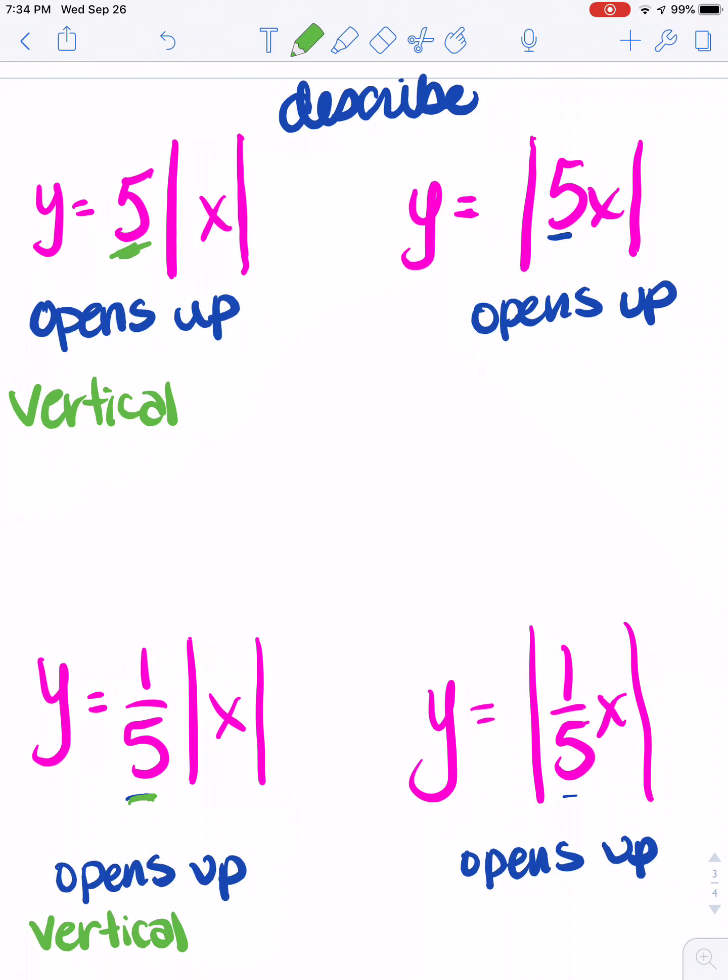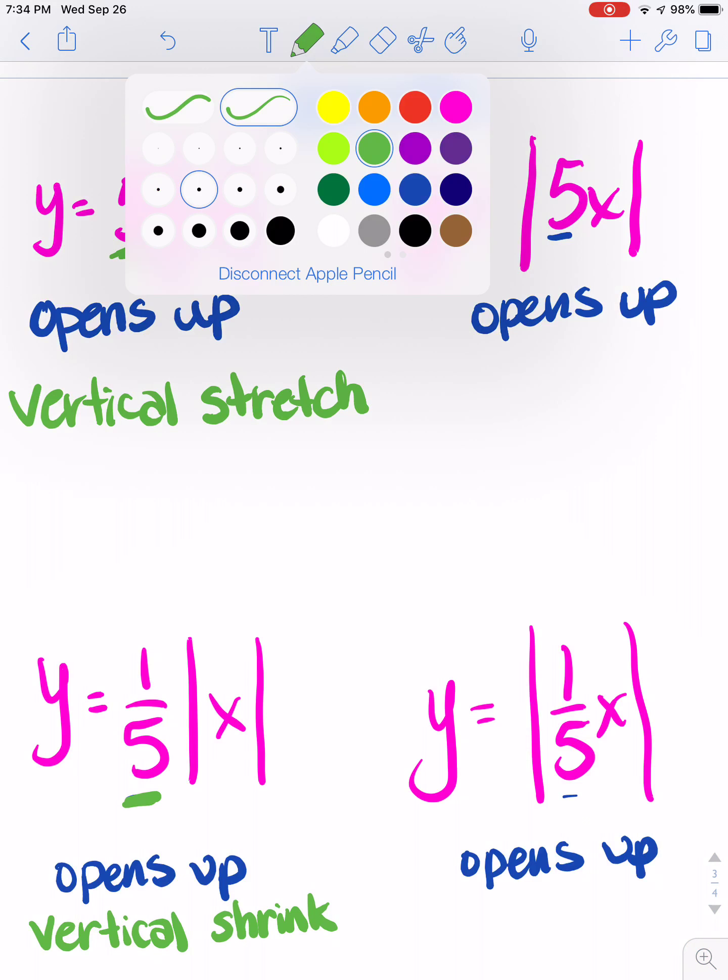Now since this 5 up here is bigger than 1, that means it's going to be a stretch. And that means because this one down here is between 0 and 1, that it's going to be a shrink.